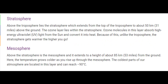Above the troposphere lies the stratosphere, which extends from the top of the troposphere to about 50 kilometers, or 31 miles, above the ground. The ozone layer lies within the stratosphere. Ozone molecules absorb high-energy ultraviolet rays from the sun and convert them to heat. Unlike the troposphere, the stratosphere gets warmer the higher you go.